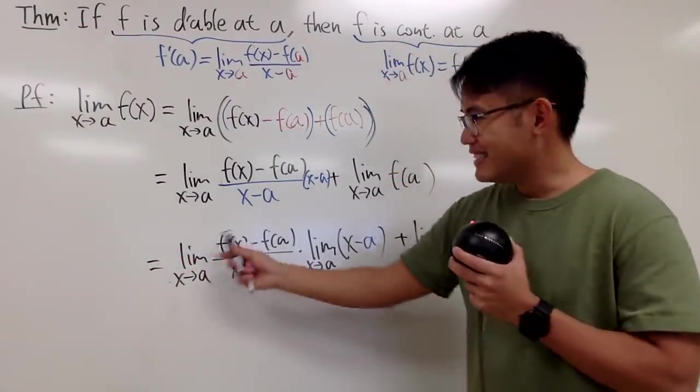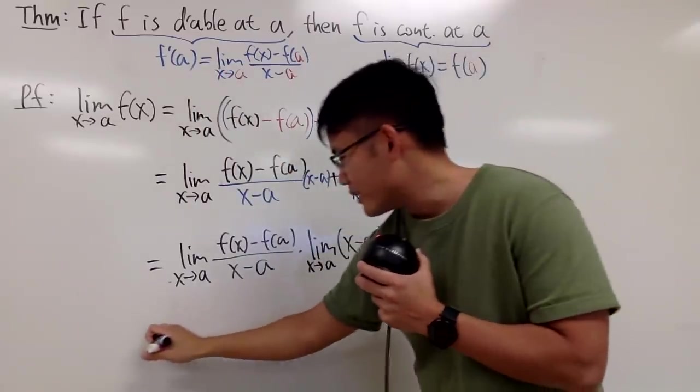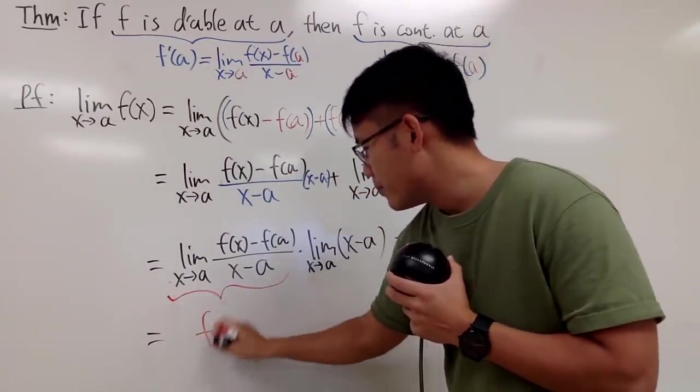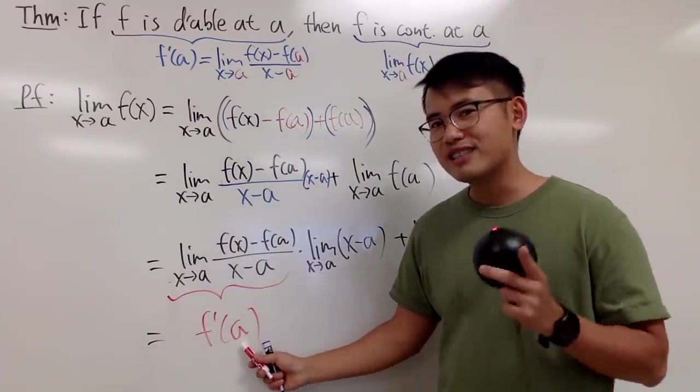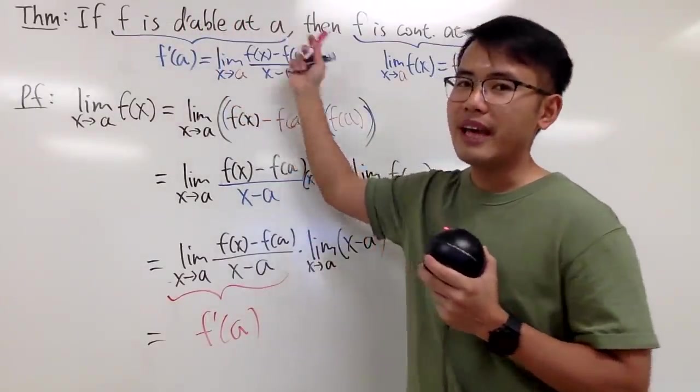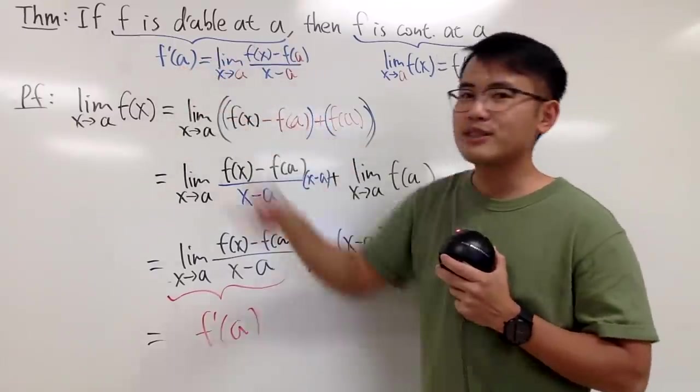And next, we see that this is what? This is just f'(a), isn't it? So, we can totally write that down for this part, f'(a). And better yet, we know this right here has to be a nice number, because we're given that f is differentiable at a, so this limit must exist. In other words, this has to be a nice number.